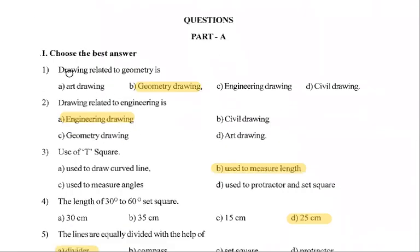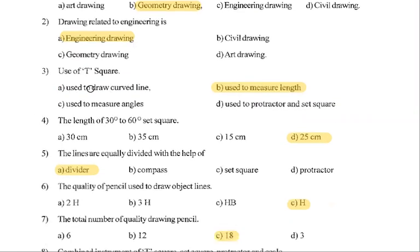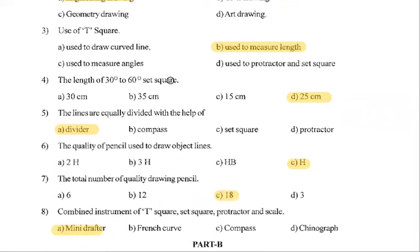The drawing is related to geometry, geometry, geometry. Engineering letter, engineering drawing. Next, use of T-square - T-square use to measure the length. Next, in the length 30 degree to 60 degree square, 25 centimeter.